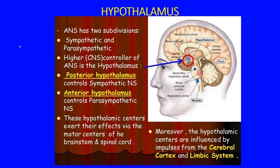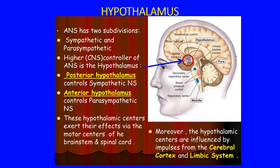These hypothalamic centers exert their effects via motor centers of the brainstem and spinal cord, influencing respiration, blood pressure, and urinary bladder control. The hypothalamic centers are also influenced by impulses from the cerebral cortex and the limbic system. Certain nuclei are specifically marked for eating behavior, water balance, and temperature control.